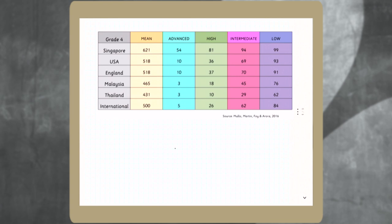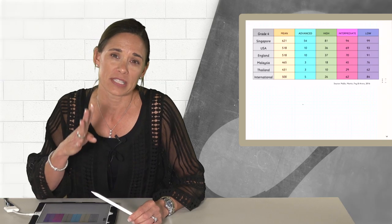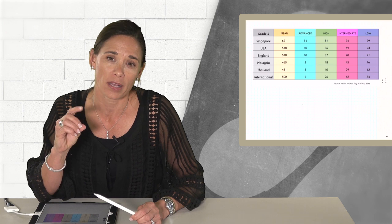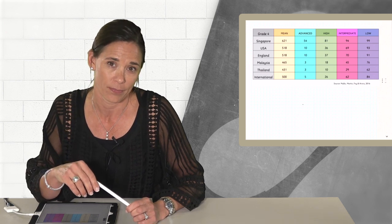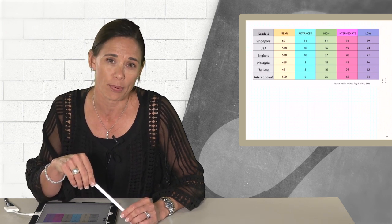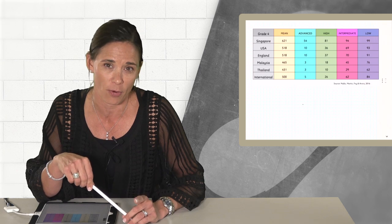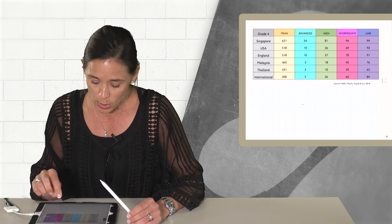The international score being 500, that means you're right on target, grade level. United States scores at 518 and Singapore at 621. A difference of 40 points would constitute one grade level. But what's most impressive about their academic performance are those next two columns.